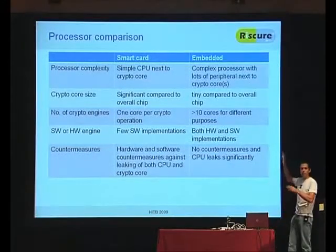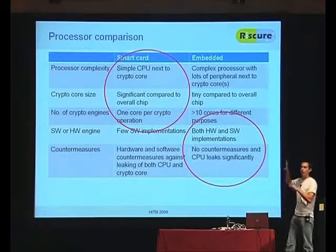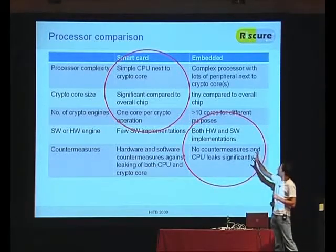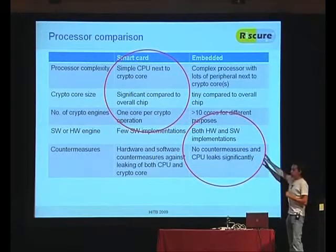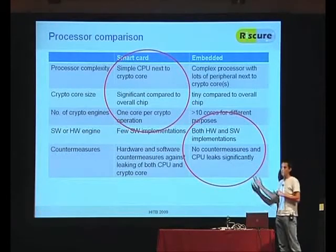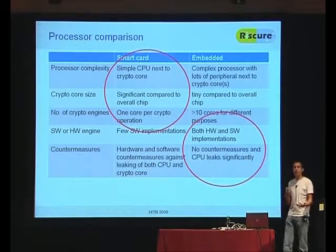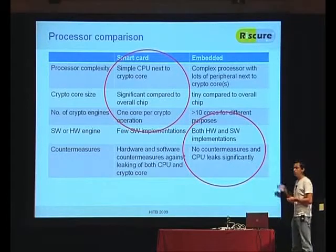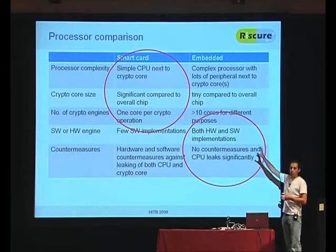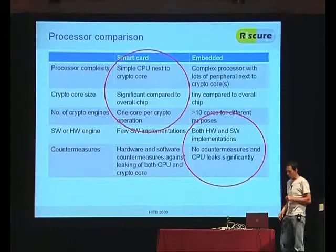I've made some tables comparing these things. Smart cards may be easier in some areas and embedded systems may be easier in others. Embedded systems generally have chips without countermeasures, whereas smart cards almost always have them, especially modern ones. Embedded systems often have both hardware and software implementations, and software implementations tend to leak a lot more information than hardware implementations. So the picture is quite mixed as to which is easier or more difficult.